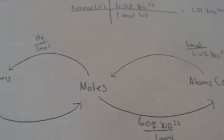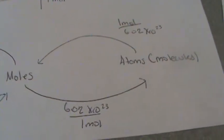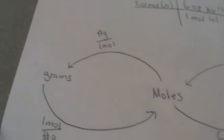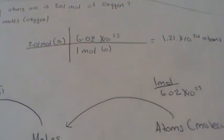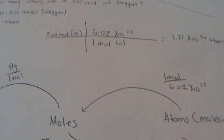To go from atoms to grams, we first have to go from atoms to moles first in order to get our grams, which has to be in a certain way.